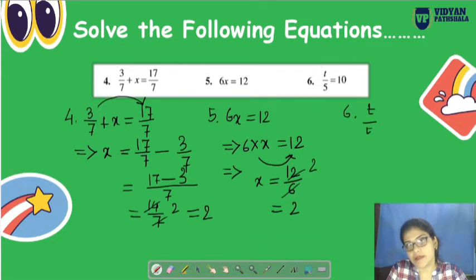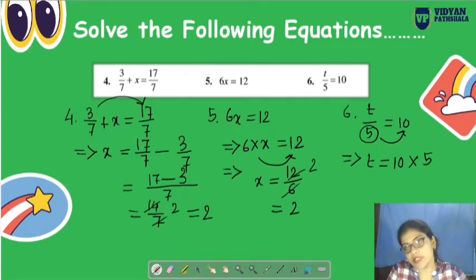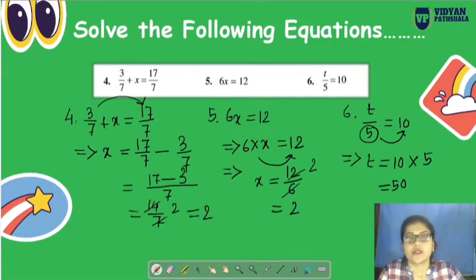Next question is 6x equals 12. Now 6x means 6 times x equals 12. When multiply goes to the other side, what happens? It becomes divide. So x equals 12/6, that is 2. 6 twos are 12, so x equals 2. Very easy.